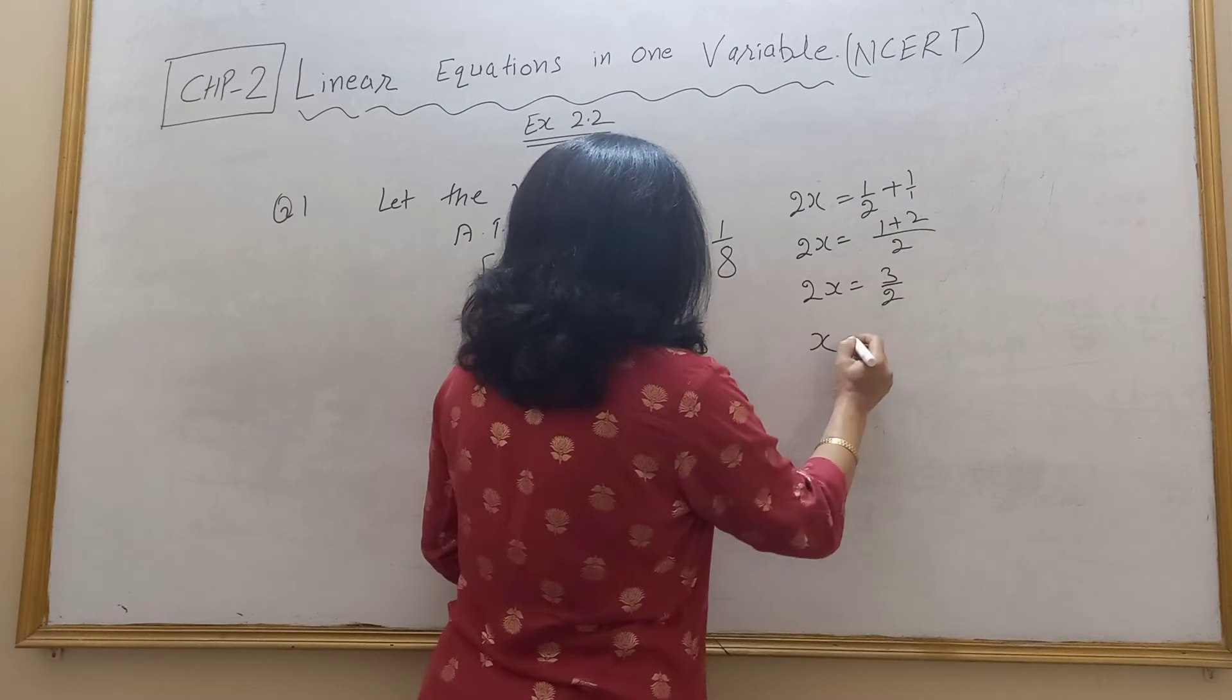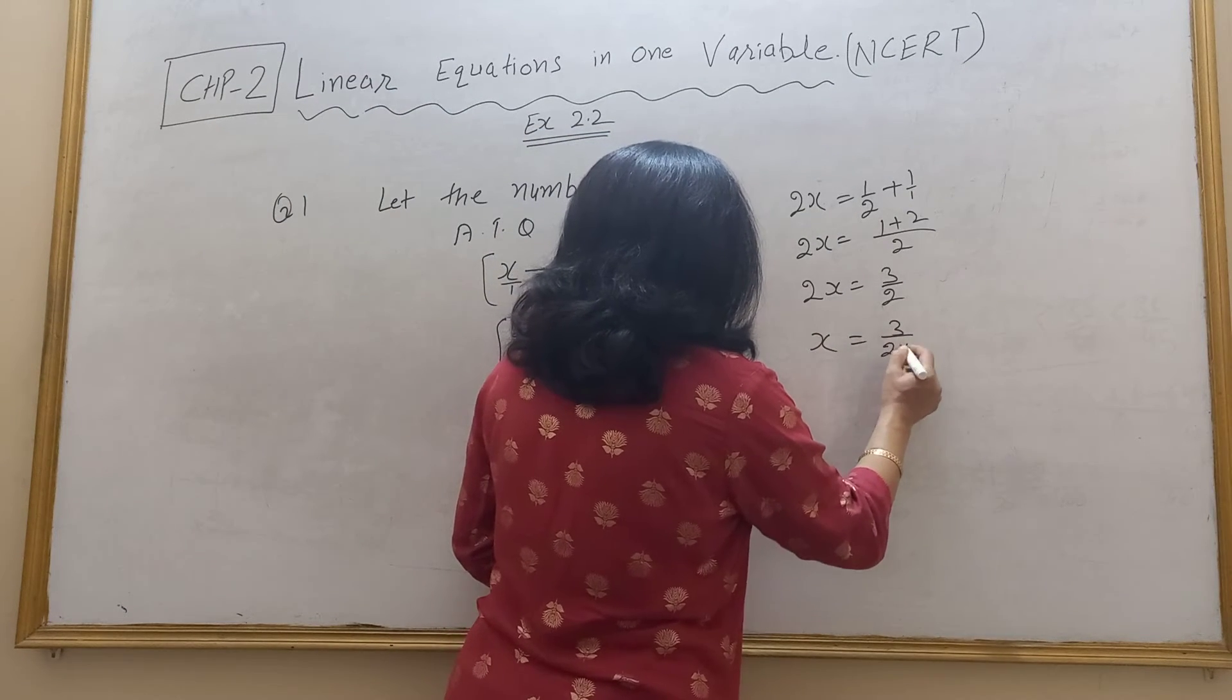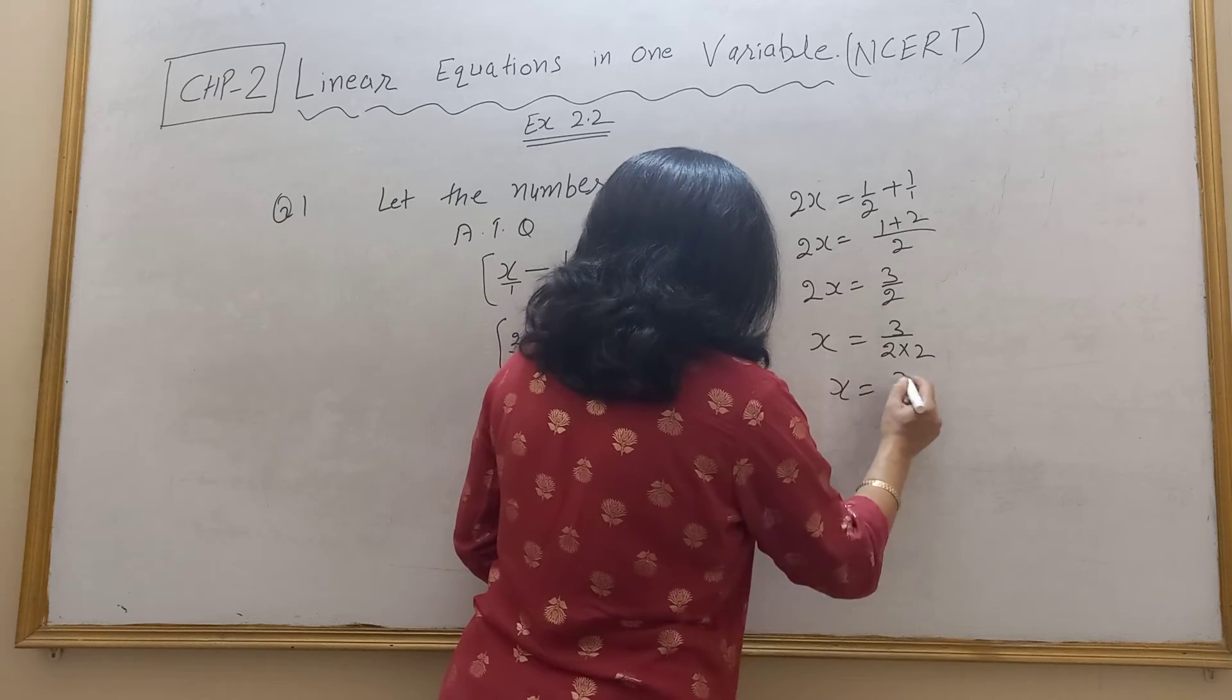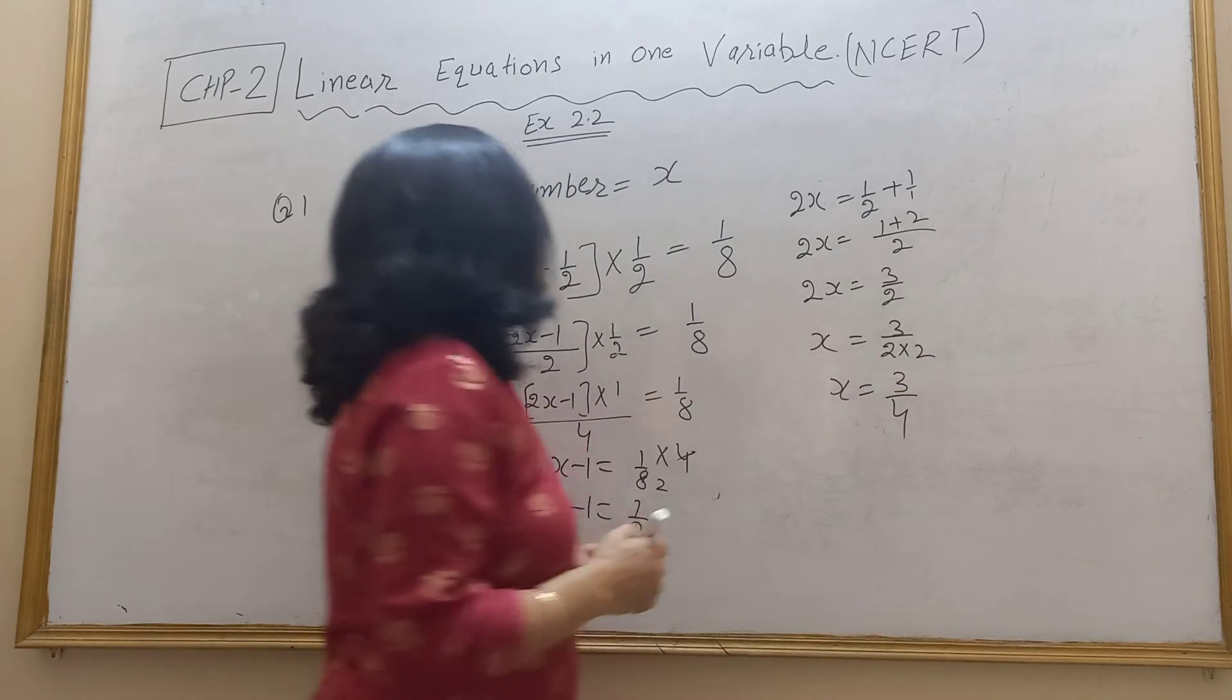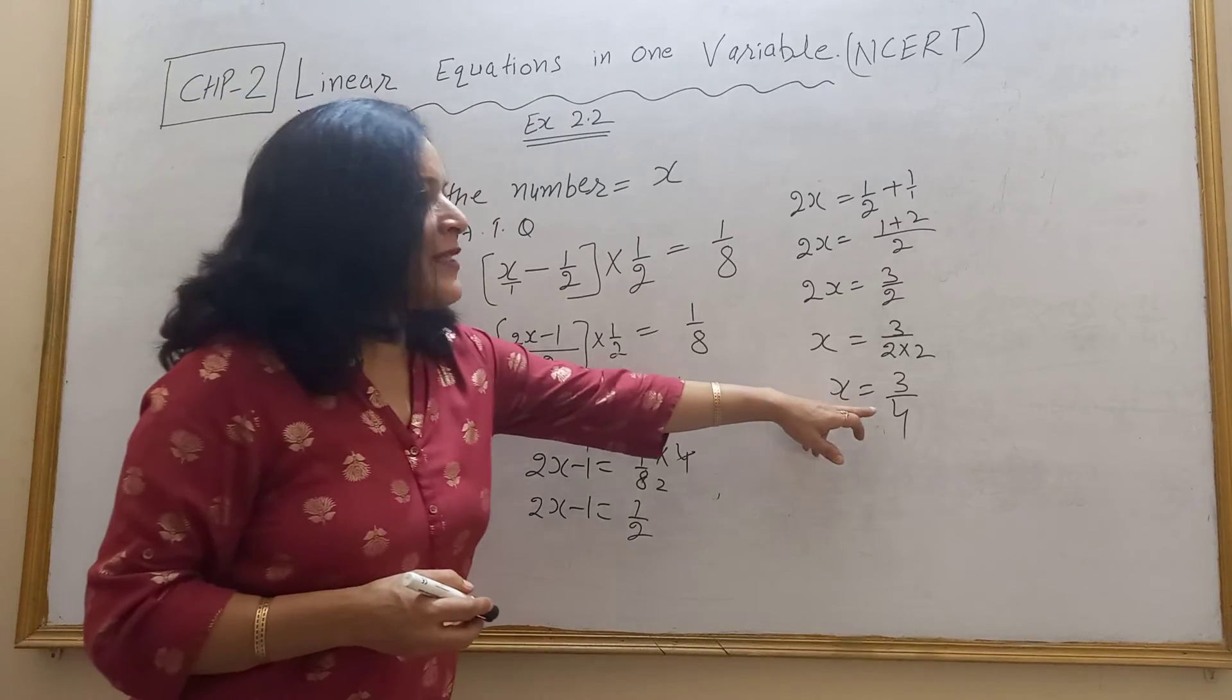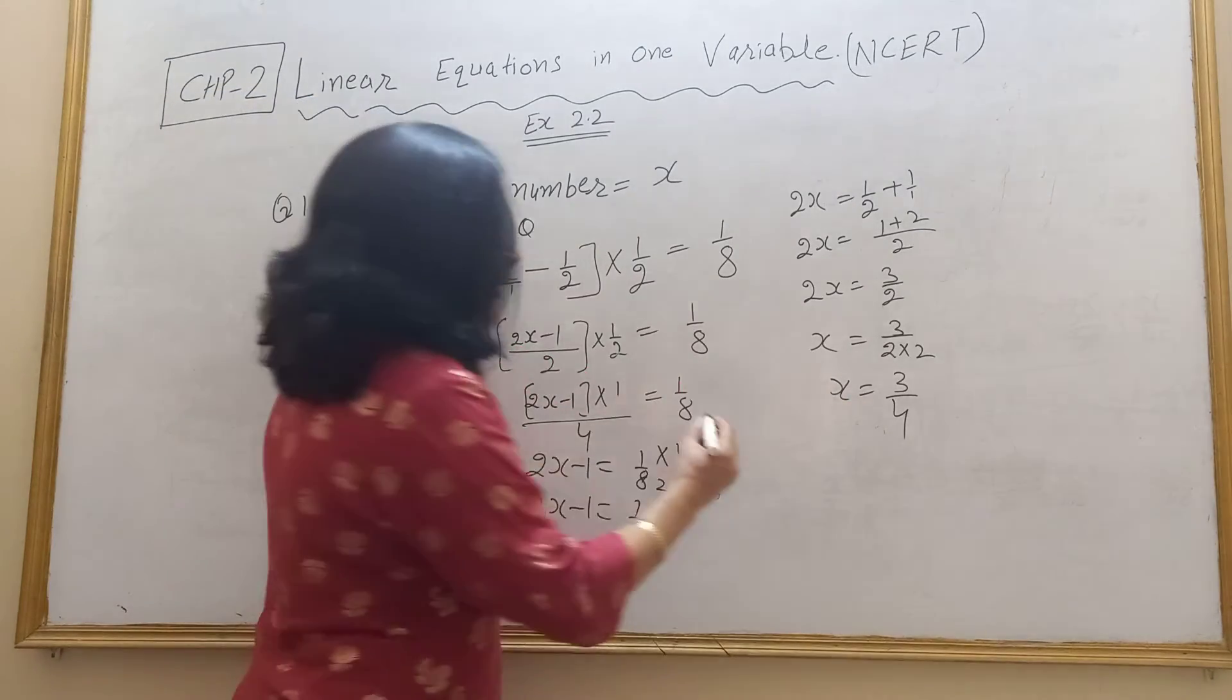So the denominator will be divided. So your answer will be 3 upon 4. What will be answer? 3 upon 4. You can check.